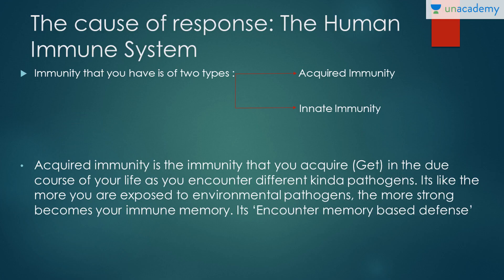The cause of all these responses is the human immune system. There are two kinds of immunity. One is acquired immunity — as the word suggests, it is immunity you acquire in due course of time. And then there is innate immunity. Acquired immunity is the immunity that you acquire during the course of your life as you encounter different kinds of pathogens. The more you are exposed to environmental pathogens, the stronger your immune memory becomes. It's an encounter memory-based defense.